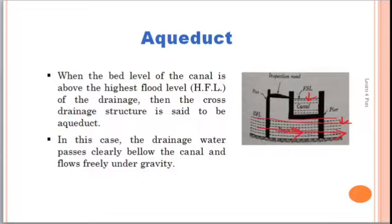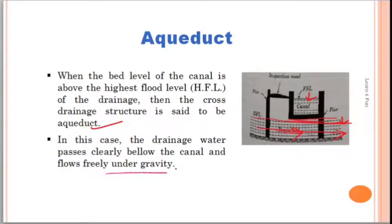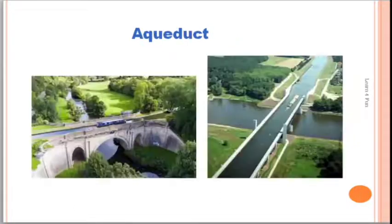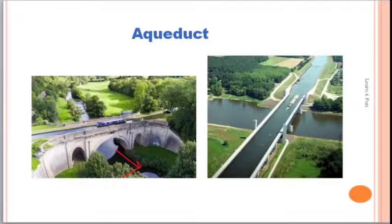The definition: when the bed level of the canal is above the highest flood level of the drainage, the cross drainage structure is said to be an aqueduct. In this case the drainage water passes clearly below the canal and flows freely under gravity. These are some examples of aqueduct — the river water is flowing freely under the action of gravity below the canal. These are very costly structures.